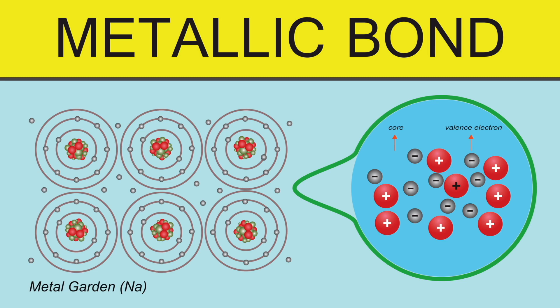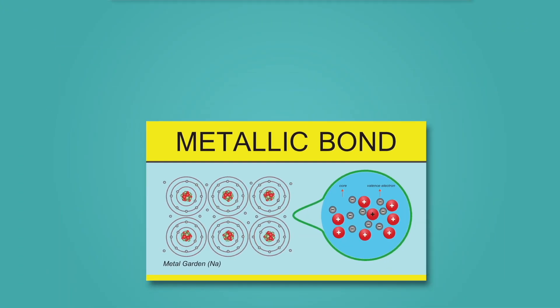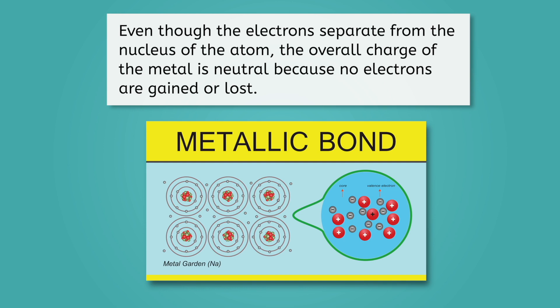Sodium has one valence electron, and that single electron in the valence shell starts moving around, and together with the valence electrons from the other six atoms forms the sea of electrons. No electrons were gained or lost in the substance, which means the metal, as a whole substance, is neutral.